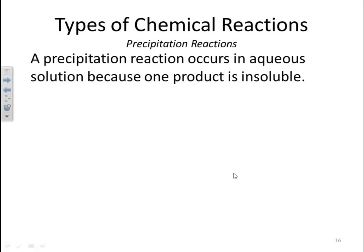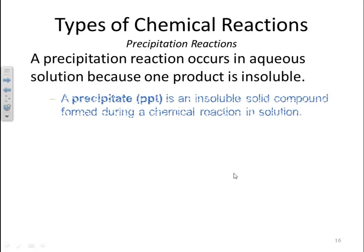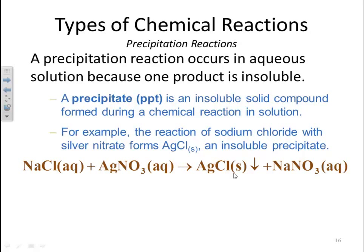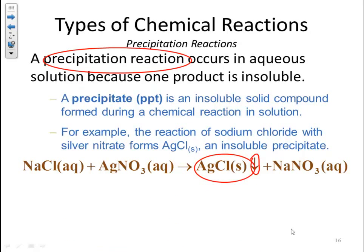A precipitation reaction occurs in aqueous solution because one of the products is insoluble — it forms a solid. A precipitate is an insoluble solid compound formed during a chemical reaction in solution. For example, a reaction of sodium chloride with silver nitrate forms silver chloride, an insoluble precipitate, according to the solubility rules. Sometimes an arrow pointing down indicates a solid forming, or an arrow pointing up indicates a gas being formed.